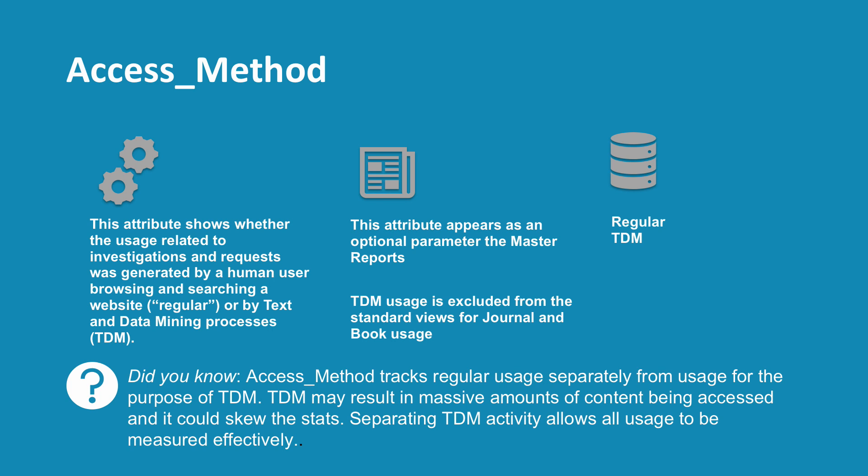Access Method is the attribute which shows whether the usage related to investigations and requests was generated by a human user or by text and data mining processes, usually called TDM. TDM is a process through which large amounts of information can be analysed electronically, allowing researchers to work through far more content than they would ever be able to do manually. Researchers create programs called crawlers or robots to capture the text or data that they need. The access method attribute appears as an optional parameter in all of the master reports. By default, TDM usage is excluded from the standard views for journal and book usage. The access methods are Regular — usage by a human — and TDM, or usage by a crawler or robot. Because TDM may result in massive amounts of content being accessed, it could skew Counter reports. Separating TDM activity from regular access allows all usage to be measured and kept separate.